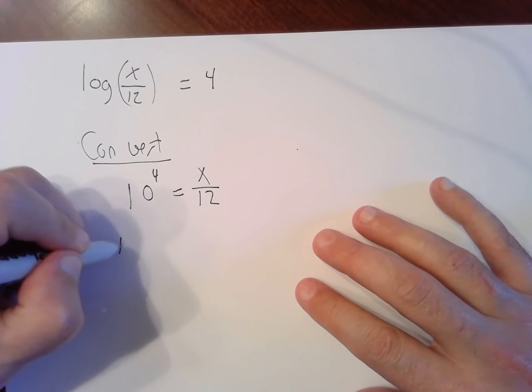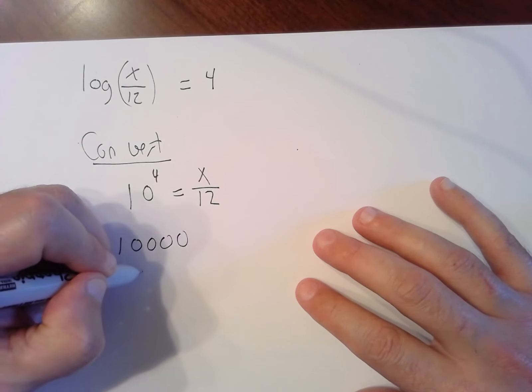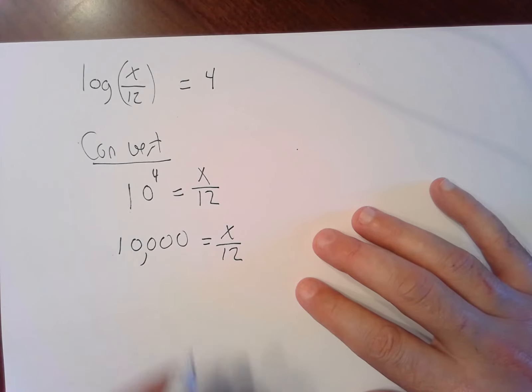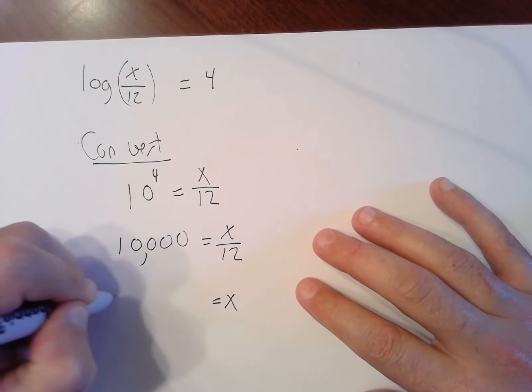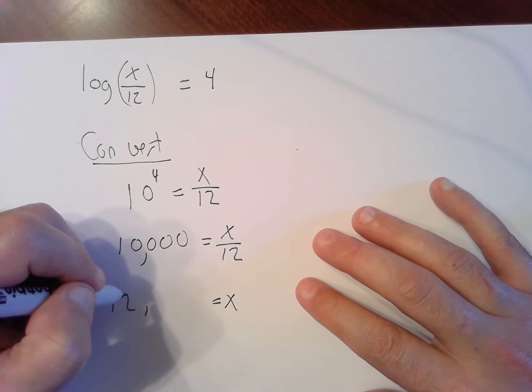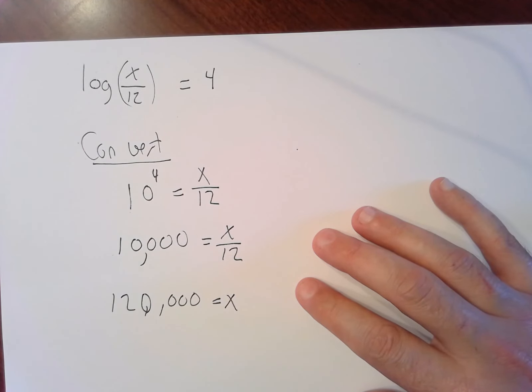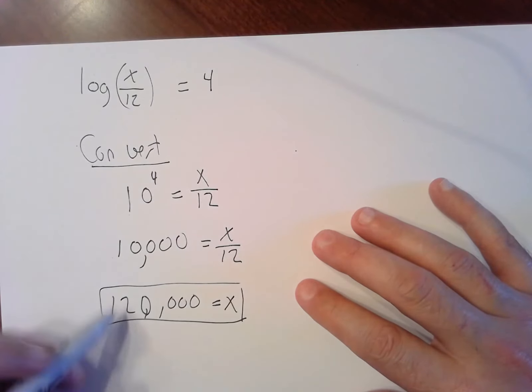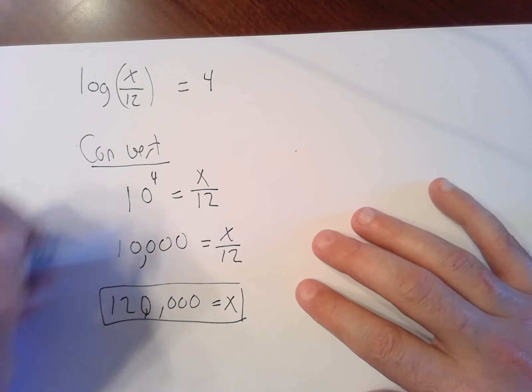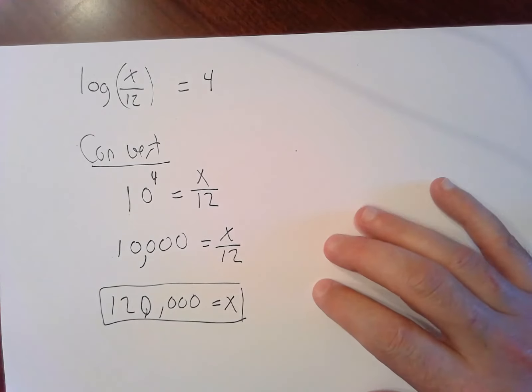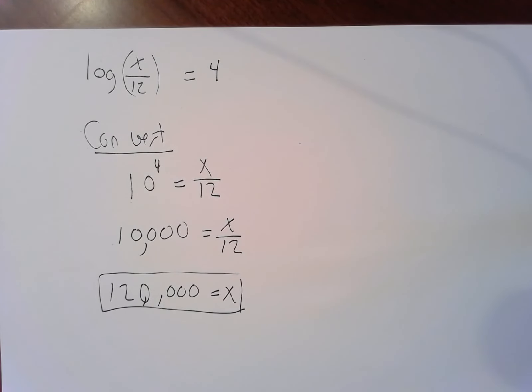10 to the fourth power is just a one followed by four zeros, so 10,000 equals x divided by 12. Multiply over and we get x is 120,000. And we should check and make sure that's allowed. 120,000 divided by 12 is 10,000. We're allowed to take log of 10,000.